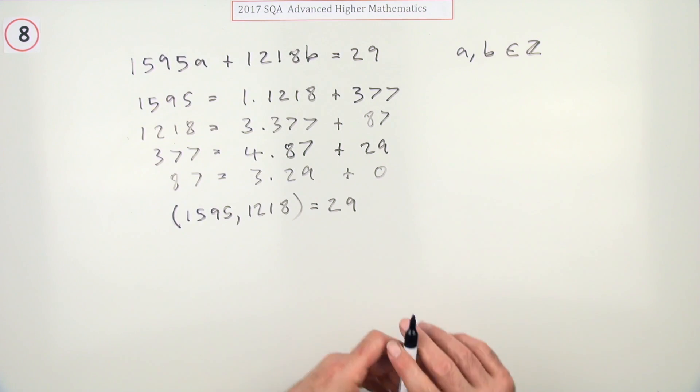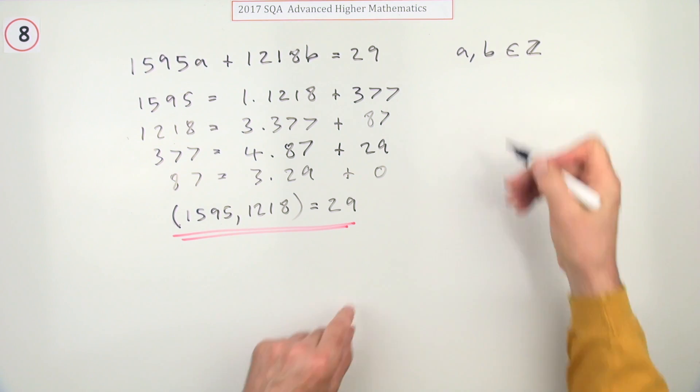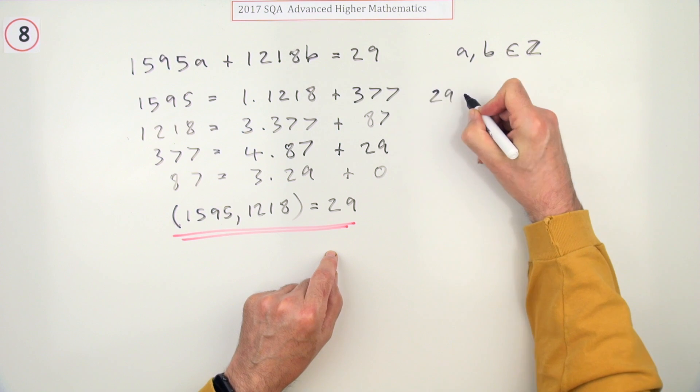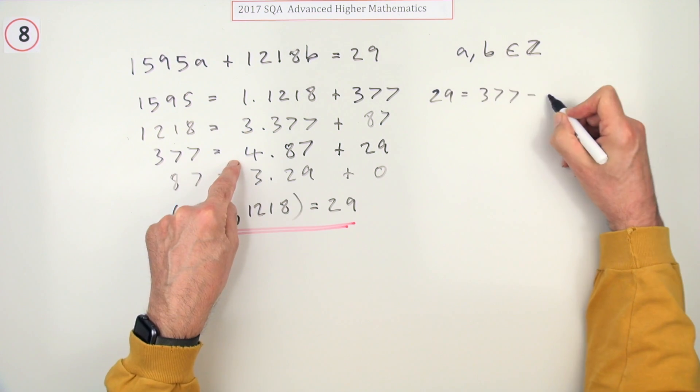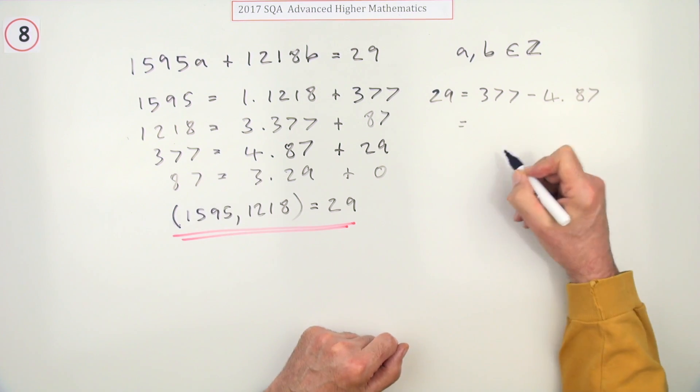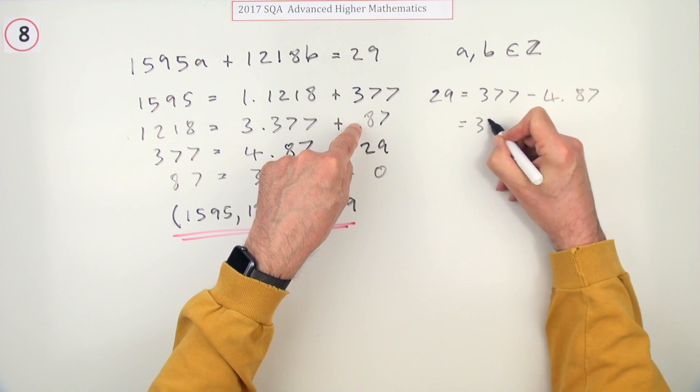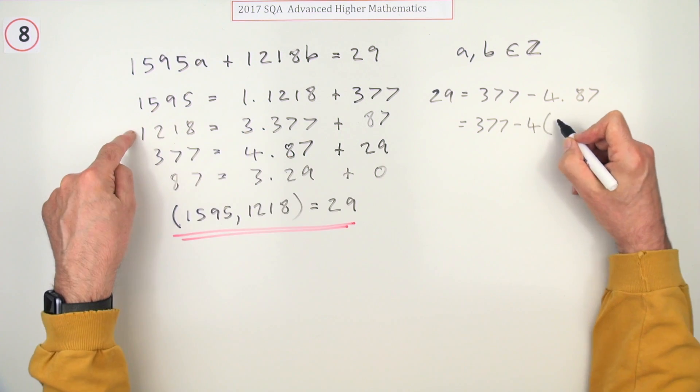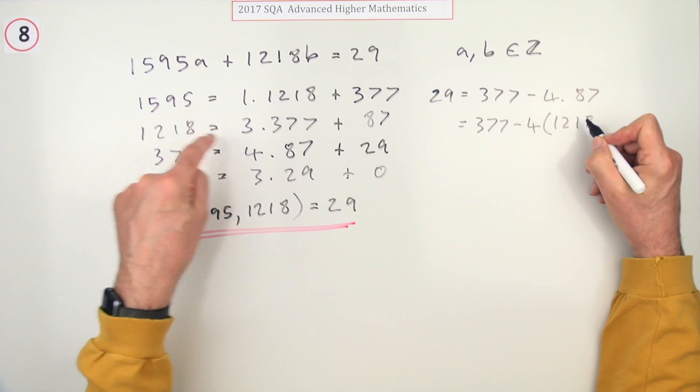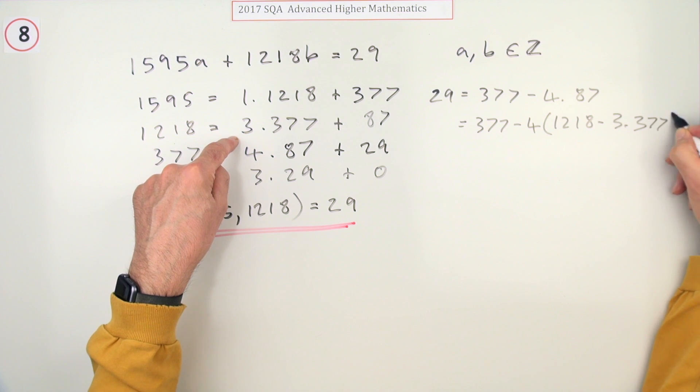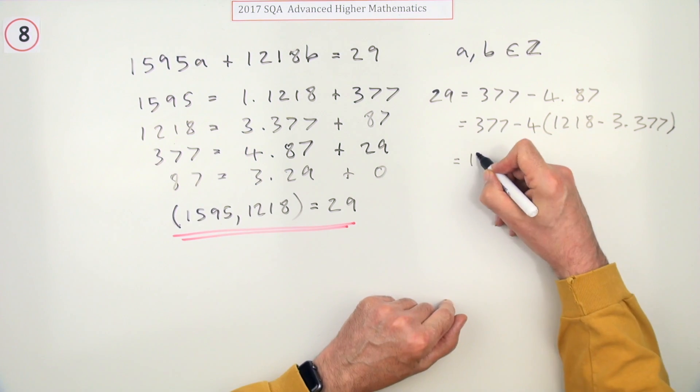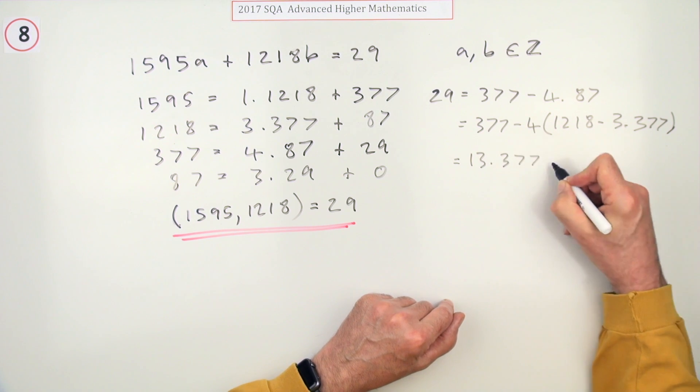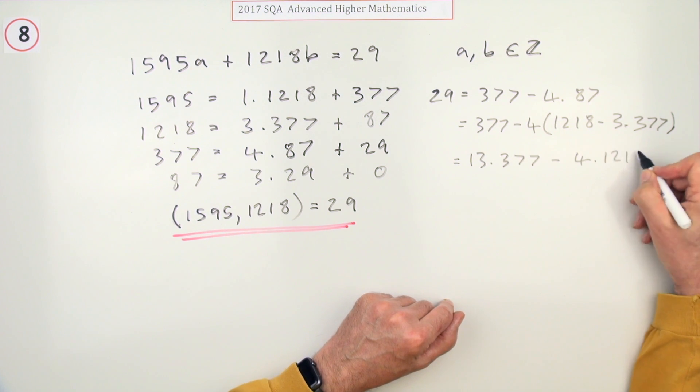So 29 is equal to - here we go - 377 minus 4 times 87. I can go to this line now and replace the 87, so it's 4 times (1218 minus 3 times the 377). So I've got another 12 of these, so I've got 13 of the 377. So I've got 13 of the 377 and 4 of the 1218.